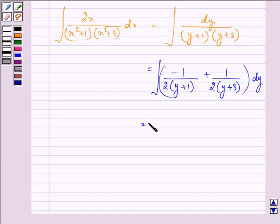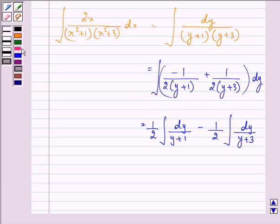Now taking the integration sign separately and taking out the constants, we have 1 upon 2 integral dy upon y plus 1 minus 1 upon 2 integral dy upon y plus 3.